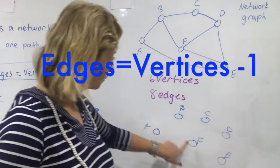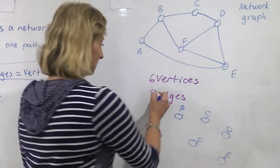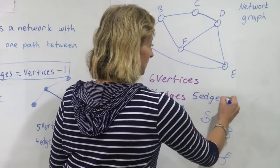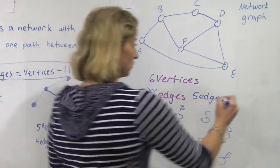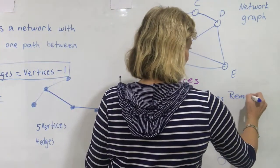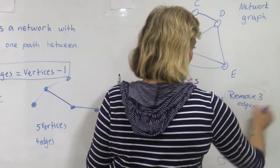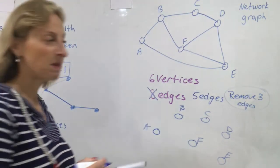So if I have one, two, three, four, five, six vertices, I need this to be five edges. That's what I need it to be to make my spanning tree. So I need to remove three edges. That's what I need to do in order to make this a spanning tree.